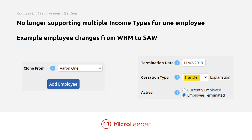Due to the complexities of Phase 2, MicroKeeper will no longer support multiple income types for a single employee. So for example, if an employee switches from working holiday maker to SOAR, this employee will need to be terminated and hired again. We will include in our guide how to do this — basically, the new employee should be added and cloned from the current employee, then the old employee can be terminated and transfer can be set as the cessation type.